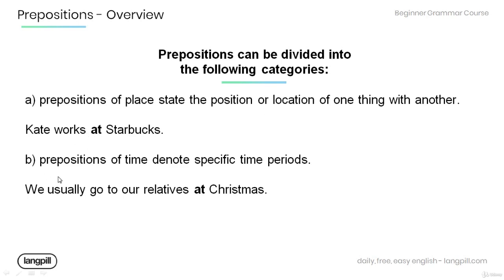B: Prepositions of time denote specific time periods. For example: we usually go to our relatives at Christmas. Christmas is a specific time period, and 'at' is used to denote this time period.